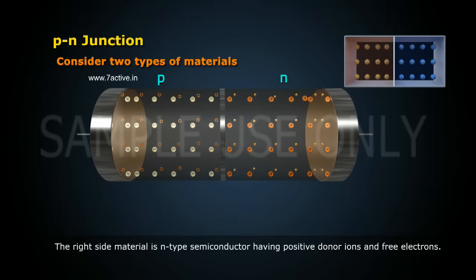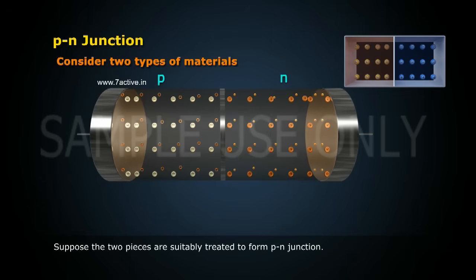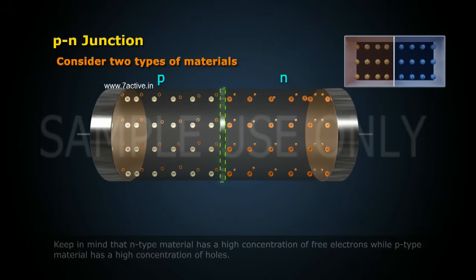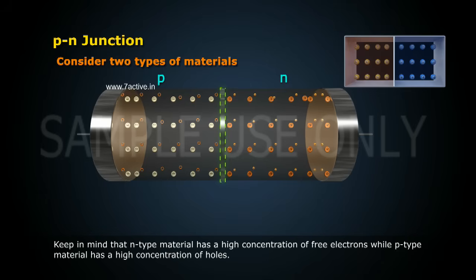The right-side material is an N-type semiconductor having positive donor ions and free electrons. Suppose the two pieces are suitably treated to form a P-N junction. Keep in mind that N-type material has a high concentration of free electrons,